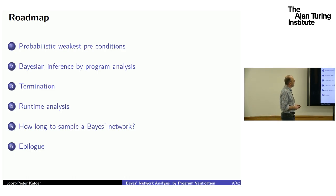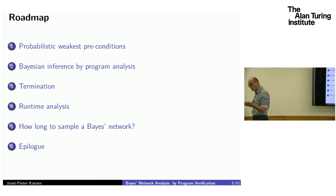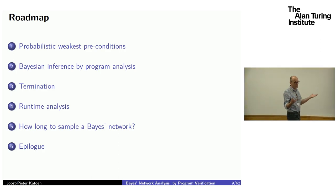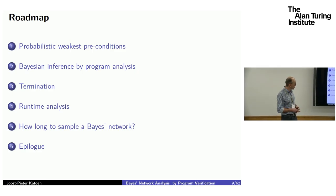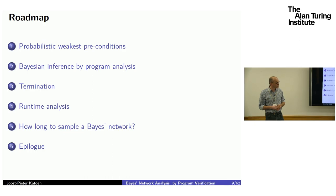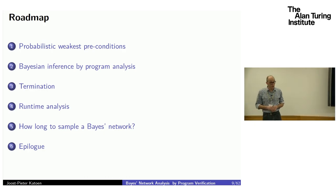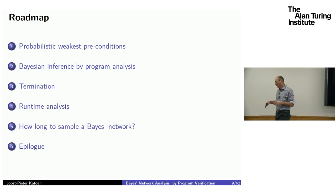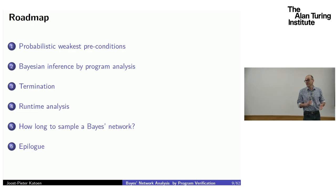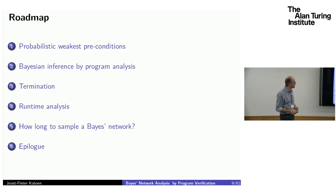I will first explain my language, which is an assembler language. Then I'll explain probabilistic weakest preconditions — a quantitative version of ordinary preconditions. Then I'll show that you can do exact Bayesian inference by means of program analysis. Then I'll talk about termination, because we have loops and need to prove a loop terminates with probability 1. Finally, I'll focus on runtime analysis: how much time does a probabilistic program need on average, applied to analyzing the expected sample time of a Bayes network.